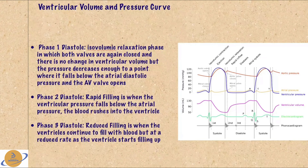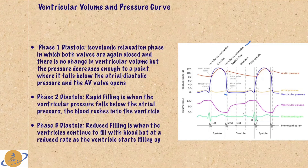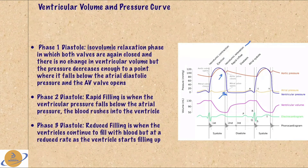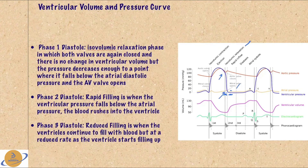Now let's talk about diastole. Diastole also has three phases, the first of which is the isovolumic relaxation phase. Similar to isovolumic contraction, volume is not changing; however, the pressure is going down because the ventricles have pumped their blood out. Both the aortic valve and the mitral valve are closed in this phase. Eventually, the ventricular pressure falls below the atrial diastolic pressure, which triggers the mitral valve to open, and the second phase of diastole — the rapid filling phase — occurs.